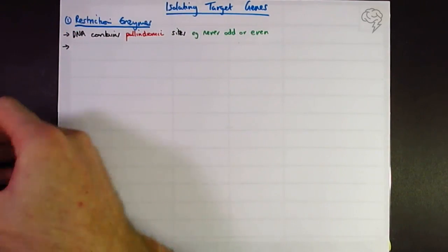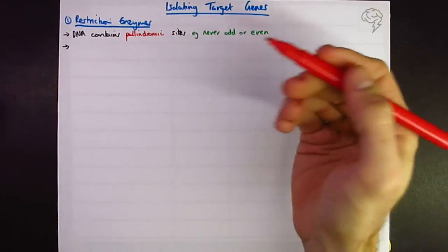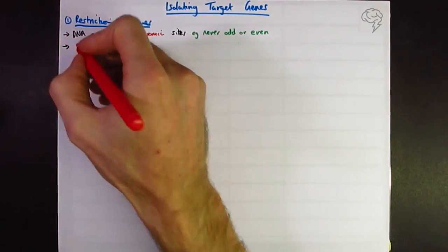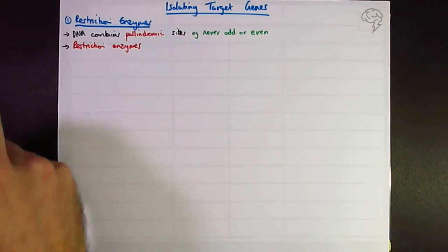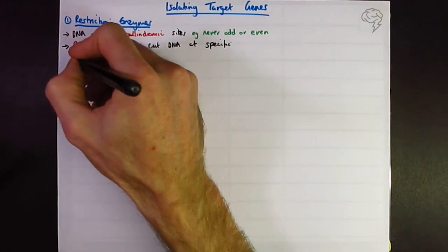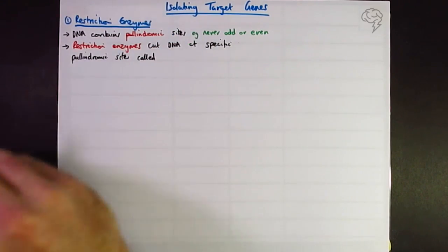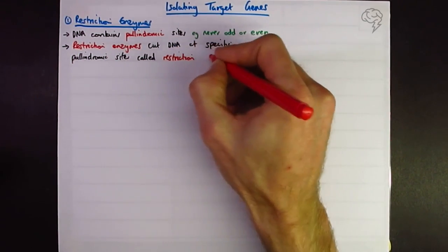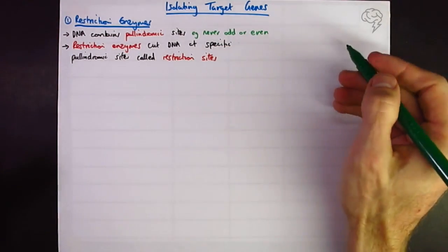So restriction enzymes are going to cut DNA at specific palindromic sites or recognition sites. We can call them recognition sites, we can call them restriction sites. I'm probably going to go with restriction sites to match the restriction enzyme. So let's look at what that might look like in DNA.